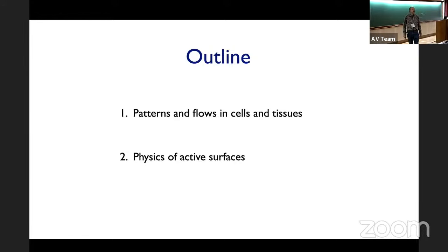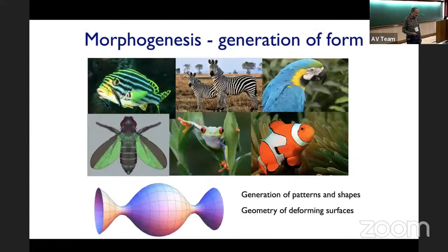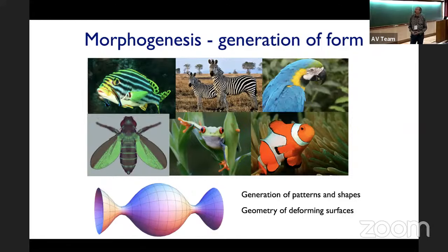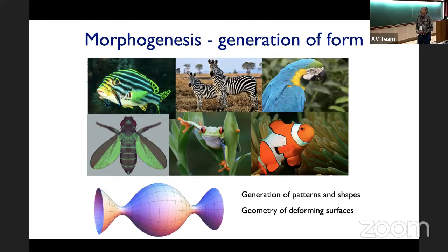I will first motivate active matter physics in cells and tissues, then go into more concepts of how to describe the geometry and dynamics of shapes and surfaces. One general motivation in biology is that during morphogenesis, a fertilized egg divides and generates many cells. These cells change their properties and types, move, organize in space, and generate complex patterns, morphologies, shapes, and structures when they build tissues, organs, and organisms. A fundamental question is to understand how shapes are generated — that's what morphogenesis means — and generating shape is a fundamentally active dynamic process that involves geometry.